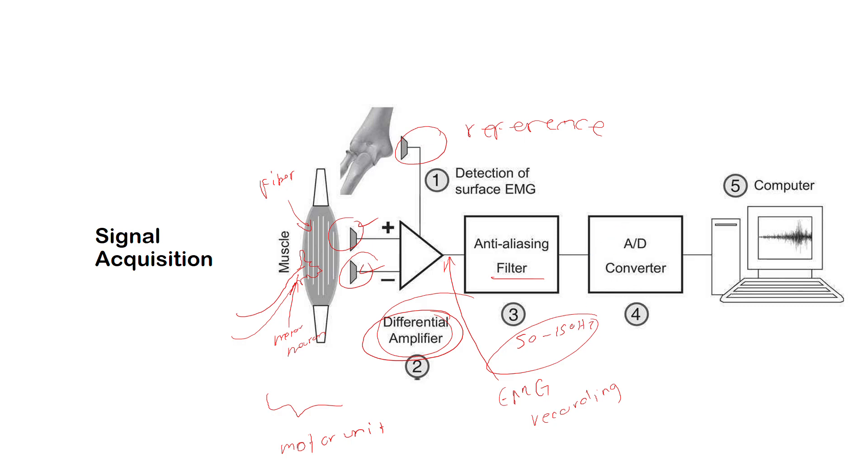Once you filter the signal, then you need to convert it to digital signals. Why? Because at this moment you have analog signals, and you need to apply this because you're going to display this by using a computer. The computer cannot read analog signals, so you need an ADC converter.